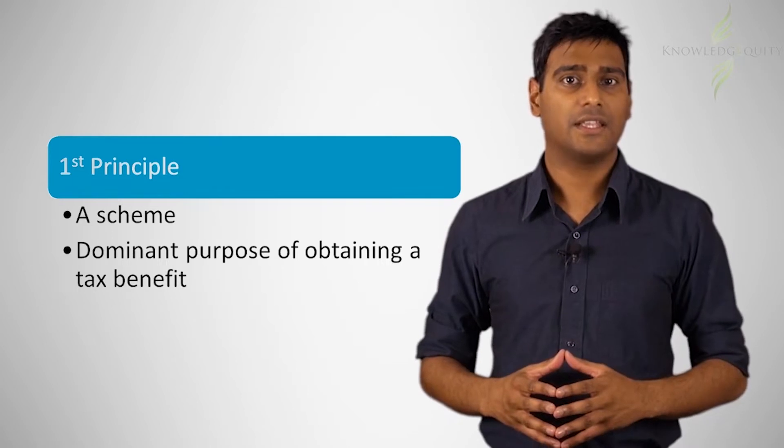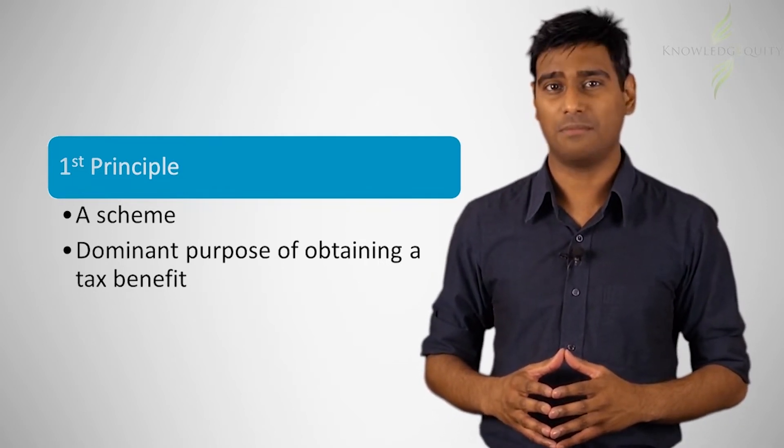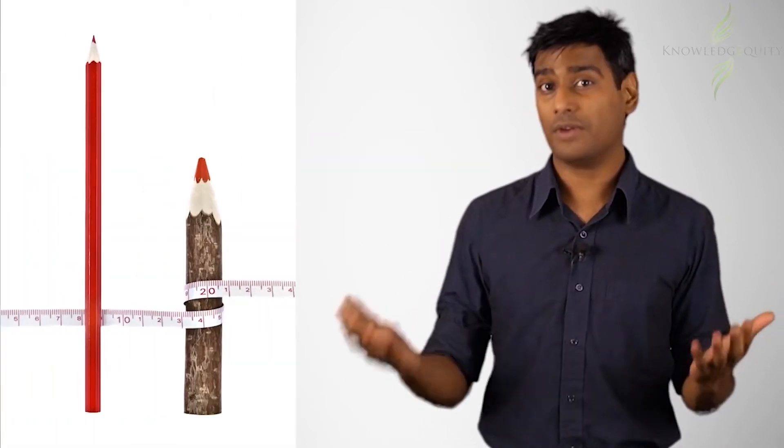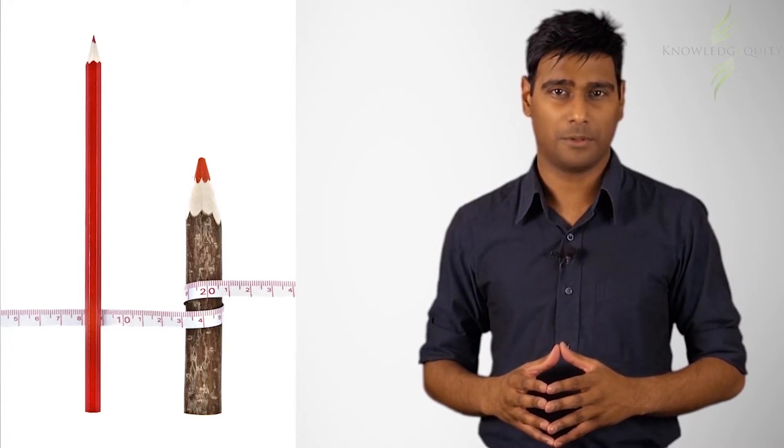With a given set of facts, there is usually more than one way that the tax office can identify what the scheme is. Generally, a scheme can be identified broadly or narrowly. Let's see what we mean by this by using an example.